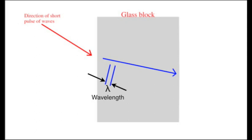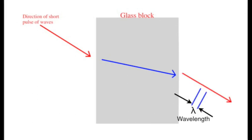As the waves enter the block and slow down, they bunch up. The wavelength is smaller. As they leave and speed up, the waves spread out. The wavelength is larger, returning to its original value.